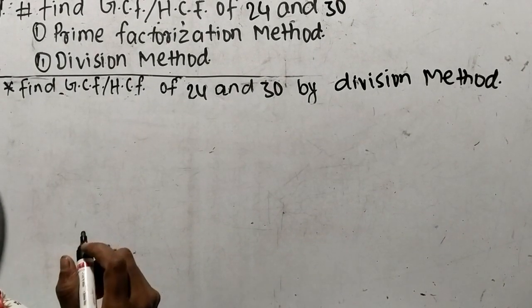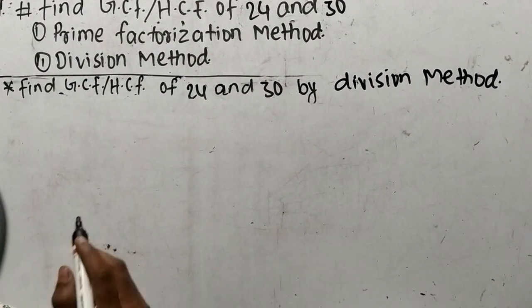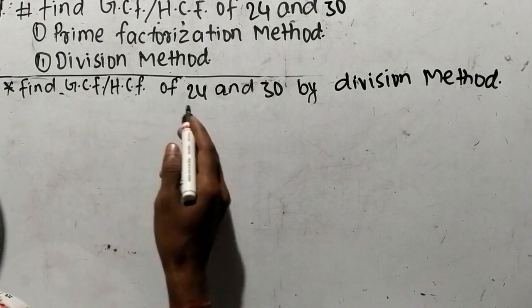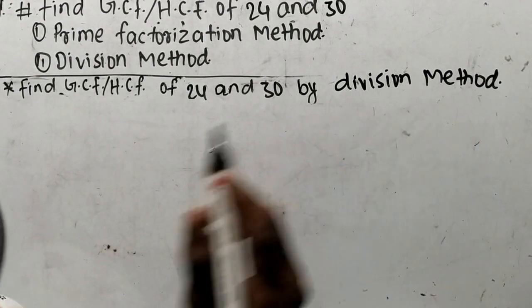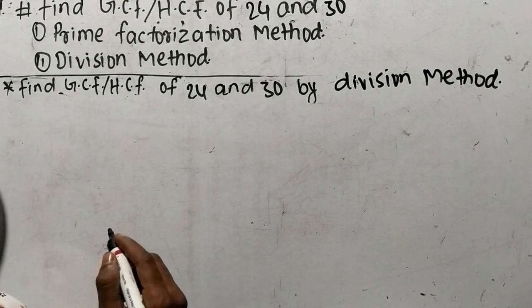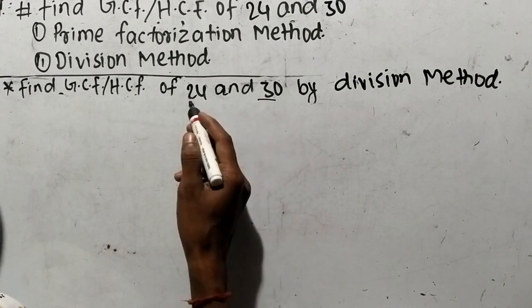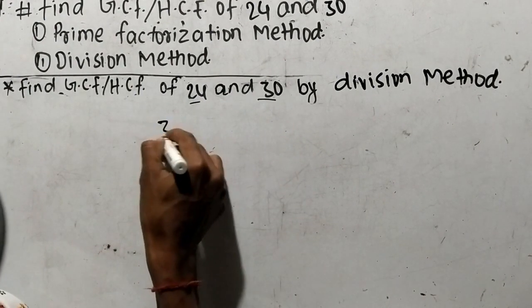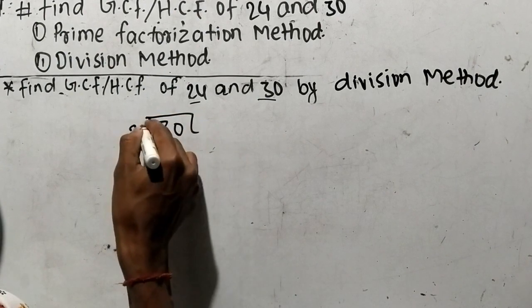Now our second method is the division method. So let's find out GCF or HCF of 24 and 30 by division method. While finding out GCF or HCF by division method, we have to divide the greater number with the lesser number. Our greater number is 30 and lesser number is 24.